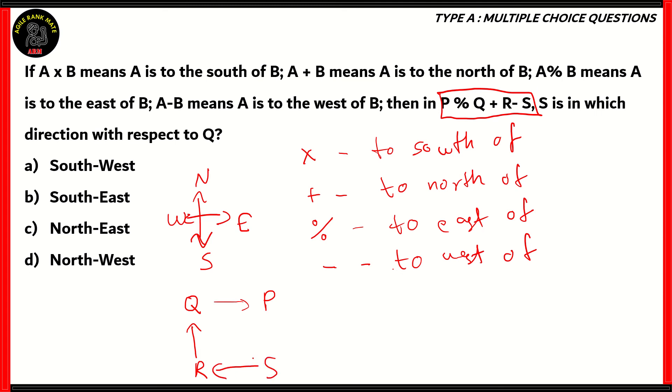Now we need to find out the direction of S with respect to Q. So when we draw a line from Q to S, you see that it follows a direction between south and east. So therefore, S is to the southeast of Q. So therefore, option B is the right answer.